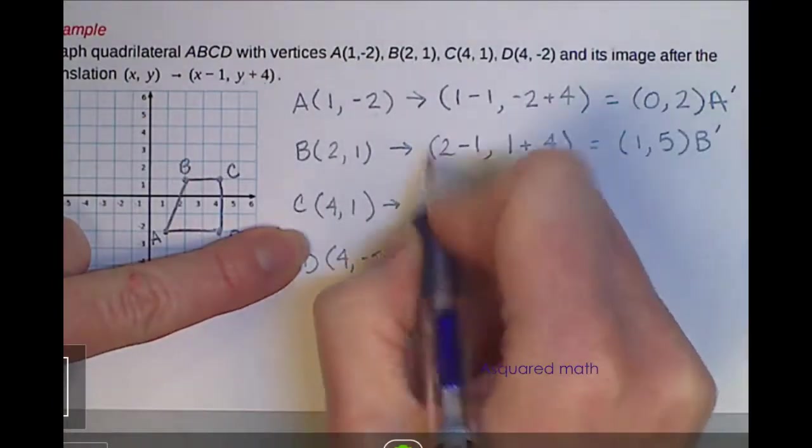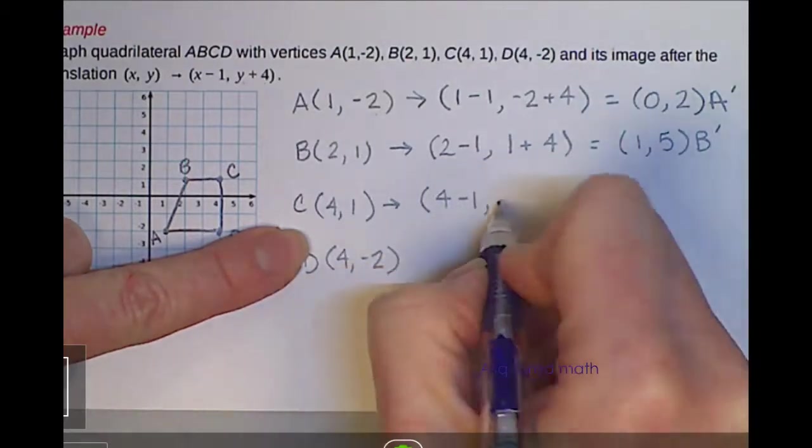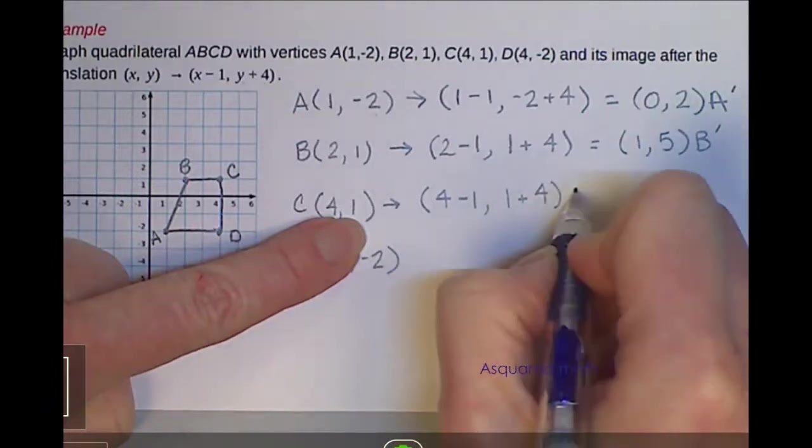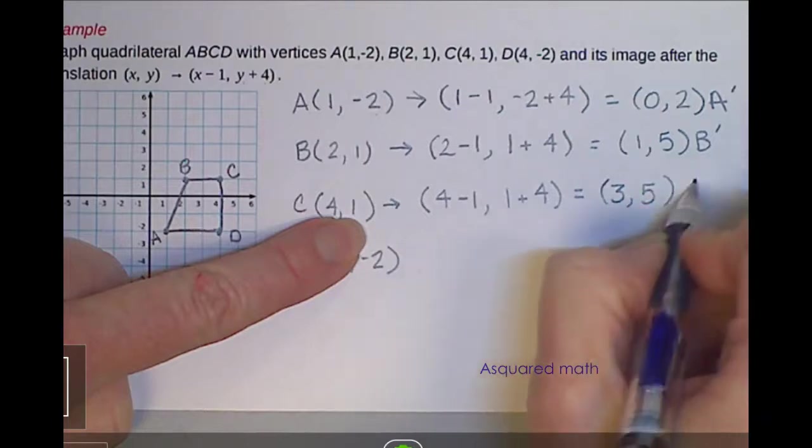For C prime, we have 4, subtract 1, and then our y value is 1, and then we add 4. That gives us a coordinate point of (3,5) for C prime.